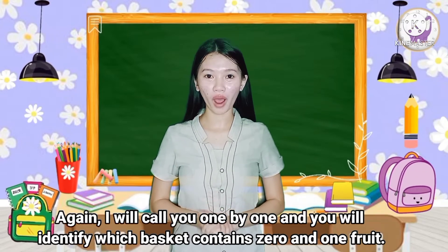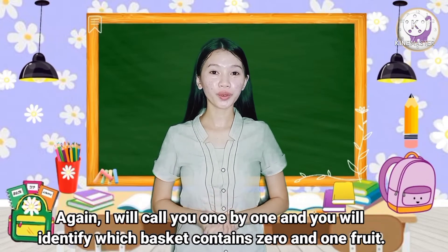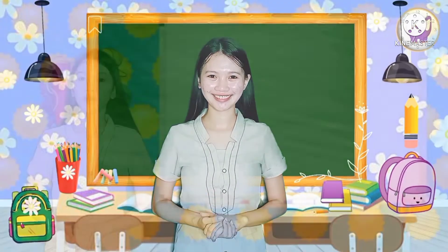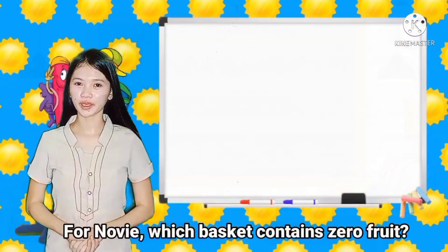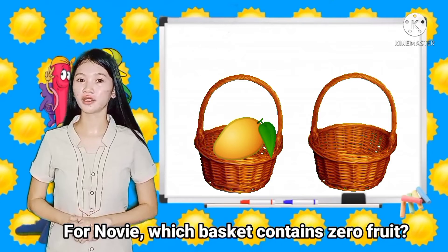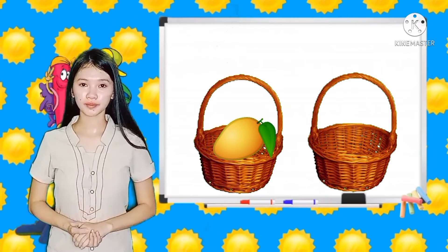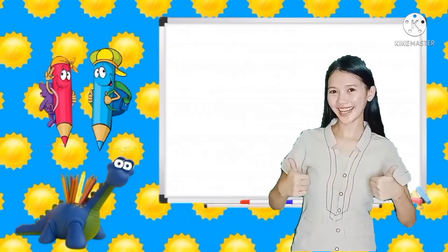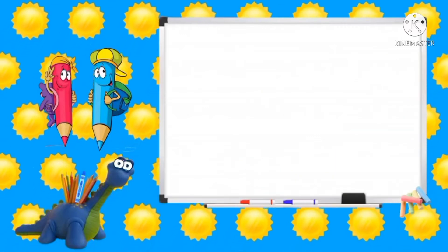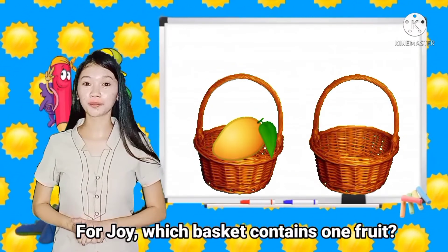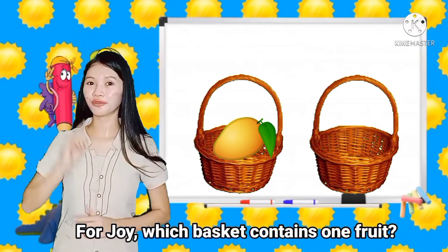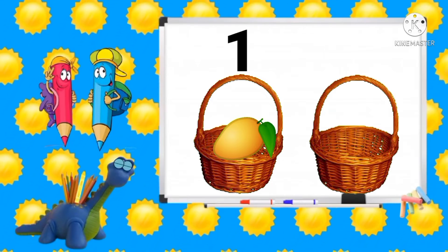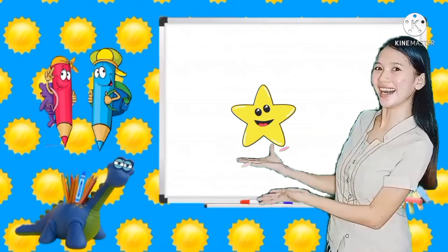I will call you one by one and you will identify which basket contains zero and one fruit. For Novi, which basket contains zero fruit? Excellent! Here's your star! For Joy, which basket contains one fruit? Very good! Here's your star!